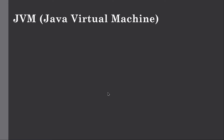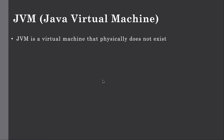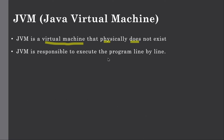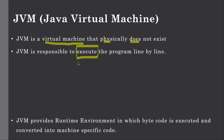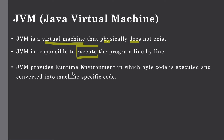Let's start with JVM. JVM is a virtual machine that physically does not exist. The JVM is responsible to execute Java programs line by line. JVM provides the runtime environment in which the bytecode is executed and converted to machine-specific code.